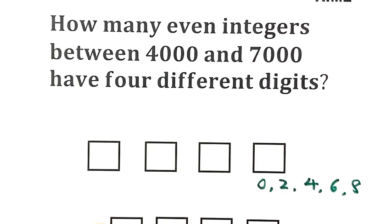Second, because the number falls between 4,000 and 7,000, this limits the thousandth digit to three choices: 4, 5, and 6.